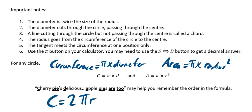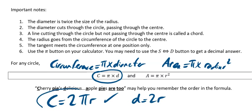It just comes from the fact that your diameter is 2 times R. So if your circumference is equal to pi times D, it's also equal to pi times 2R, which is the same as 2πR. So there are three formulas you must use: circumference equals pi times diameter, circumference equals 2πR, and the only one for your area is area equals πR².